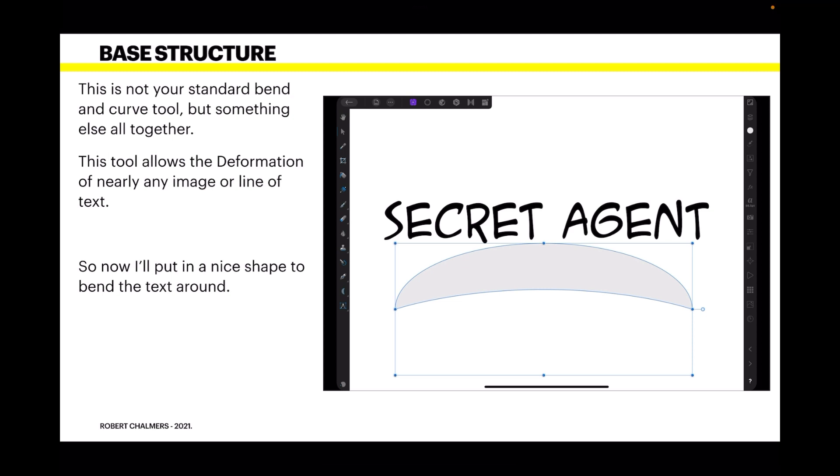Now this is not your standard bend and curve tool, but something else altogether. This tool allows the deformation of nearly any image or line of text. Now I'm using it on a line of text, but you can equally apply it to images, almost any shape. But let's look at the text.